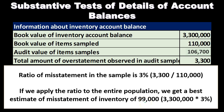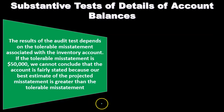We take the 3% misstatement ratio and apply it out to the entire population of $3,300,000. That gives us a projected misstatement of $99,000. The result of the audit test then depends on the tolerable misstatement associated with the inventory account.